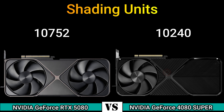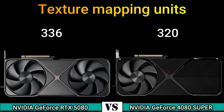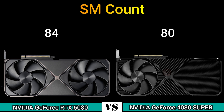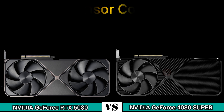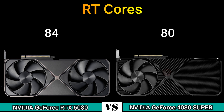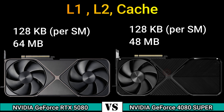Shading units: 10752 and 10240. Texture mapping units: 336 and 320. Render output units: 128 and 112. SM count: 84 and 80. Tensor cores: 336 and 320. RT cores: 84 and 80. L2 cache: 128 KB parts in 64 MB and 128 KB parts in 48 MB.